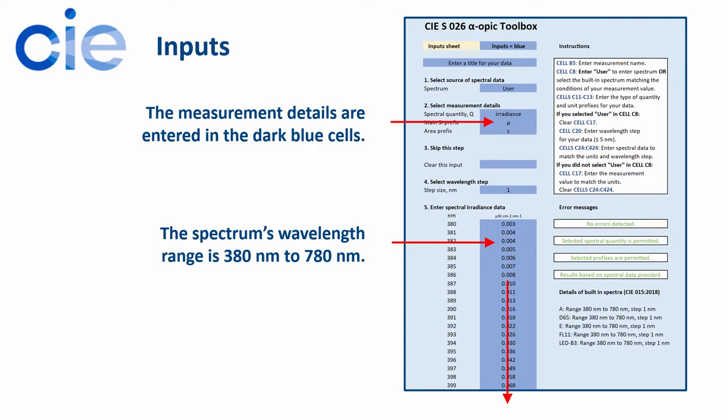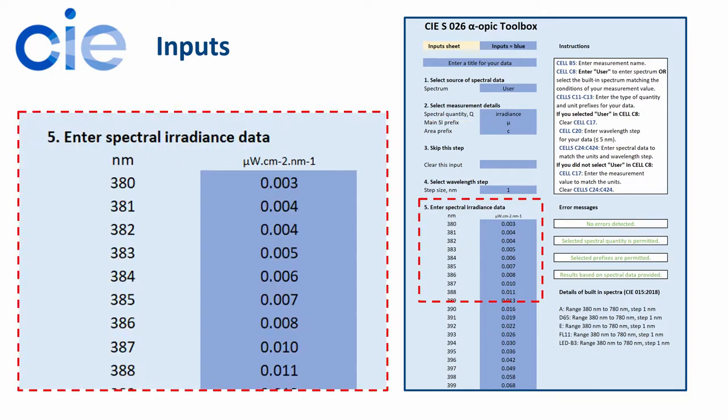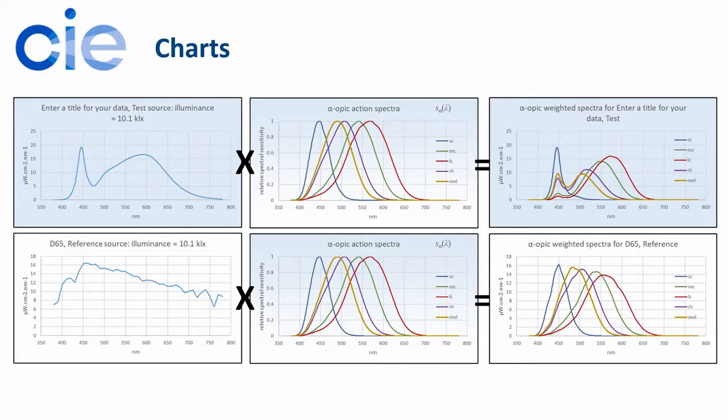And the range of dark blue cells at the bottom are the spectral measurement data themselves. And with all these inputs completed, you can see the range of spectral data. And with all these inputs completed, you get charts which show you an important part of how the calculations done.